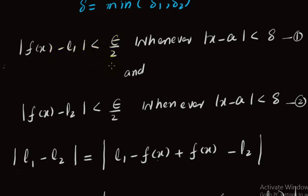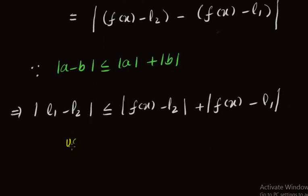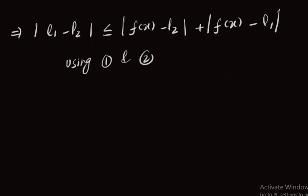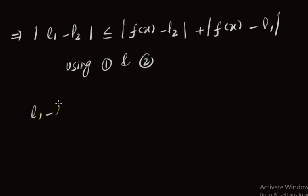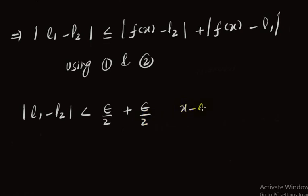Now using equations 1 and 2: |f(x) − l₁| < ε/2 and |f(x) − l₂| < ε/2. Applying both equations, we get |l₁ − l₂| < ε/2 + ε/2, whenever |x − a| < δ.